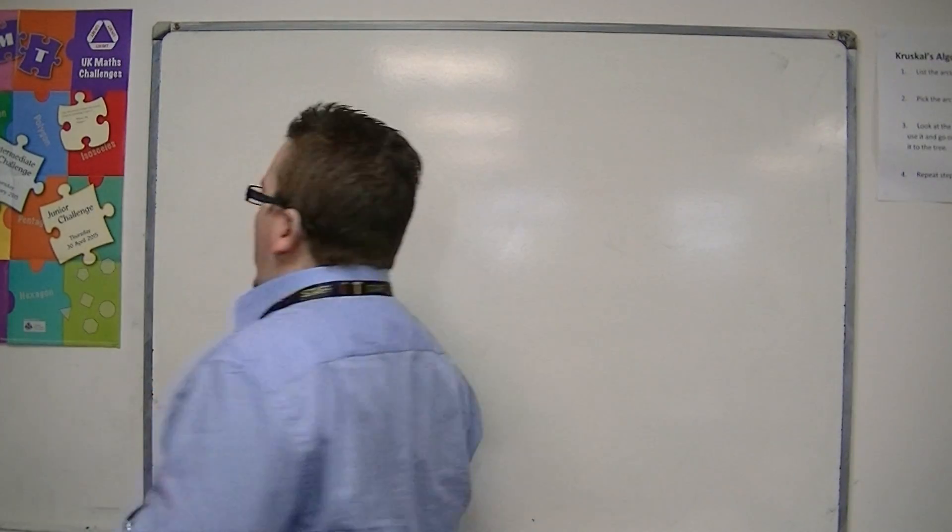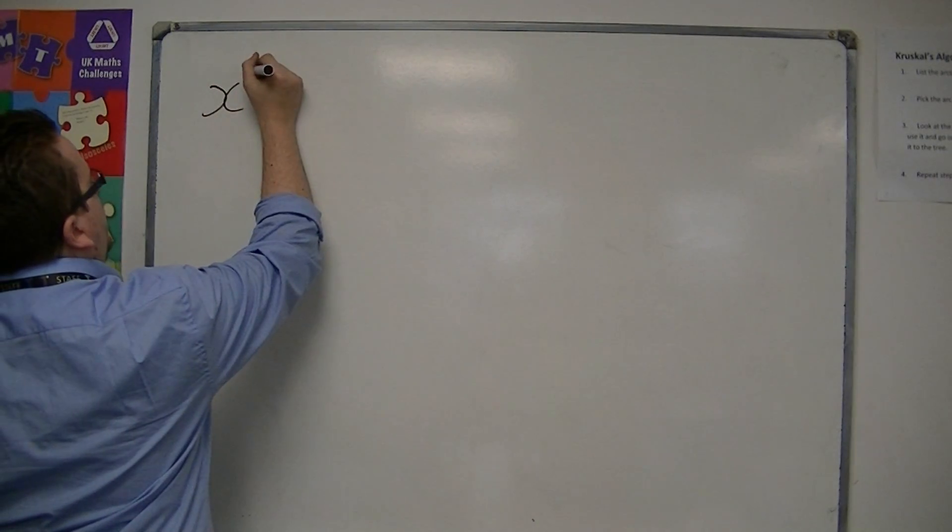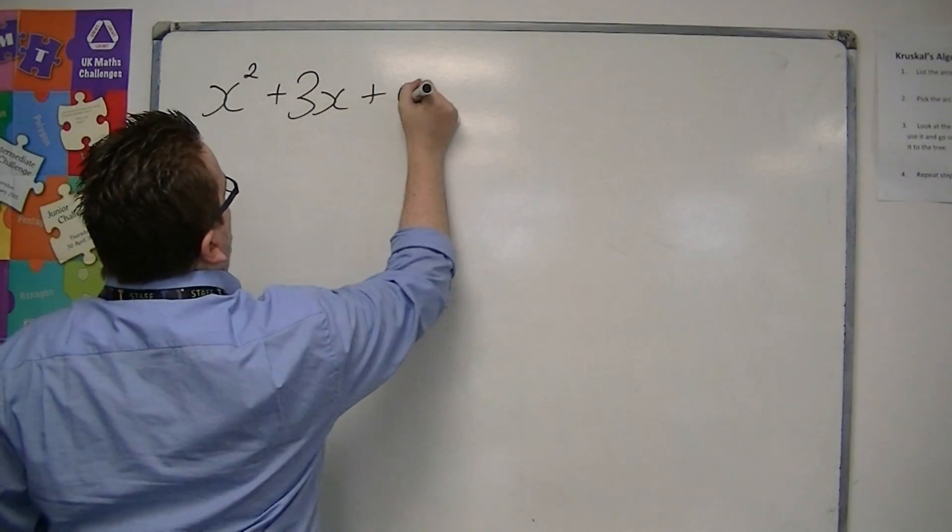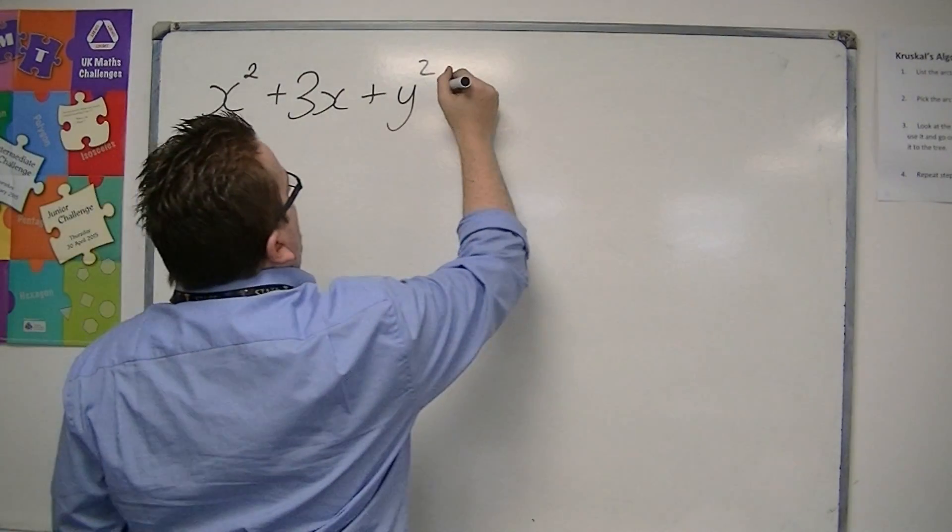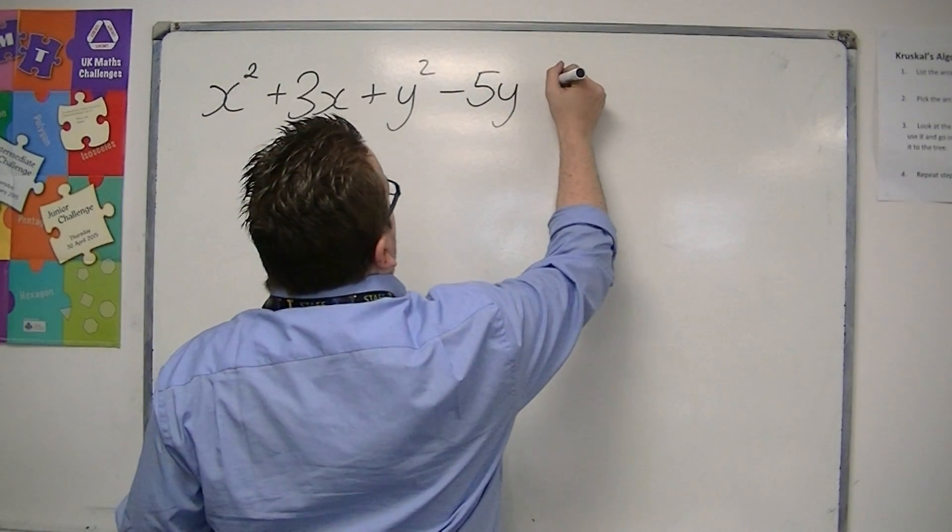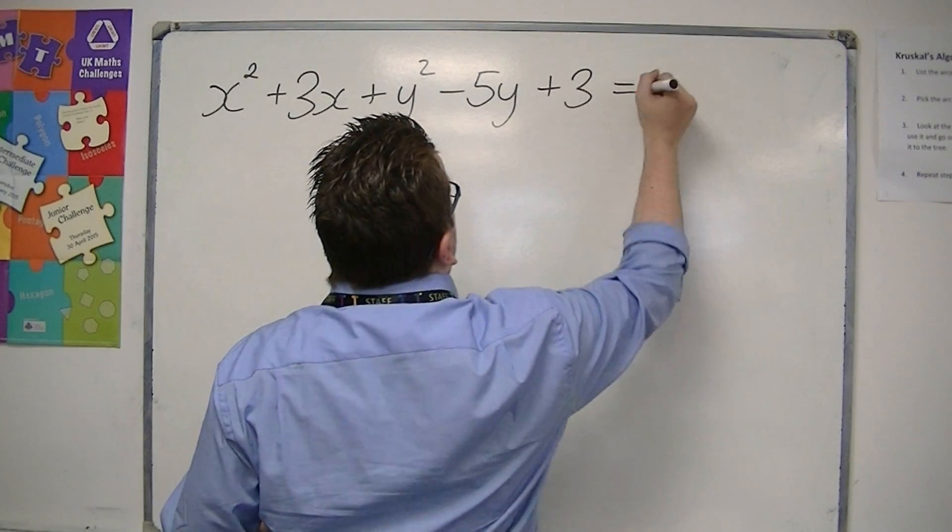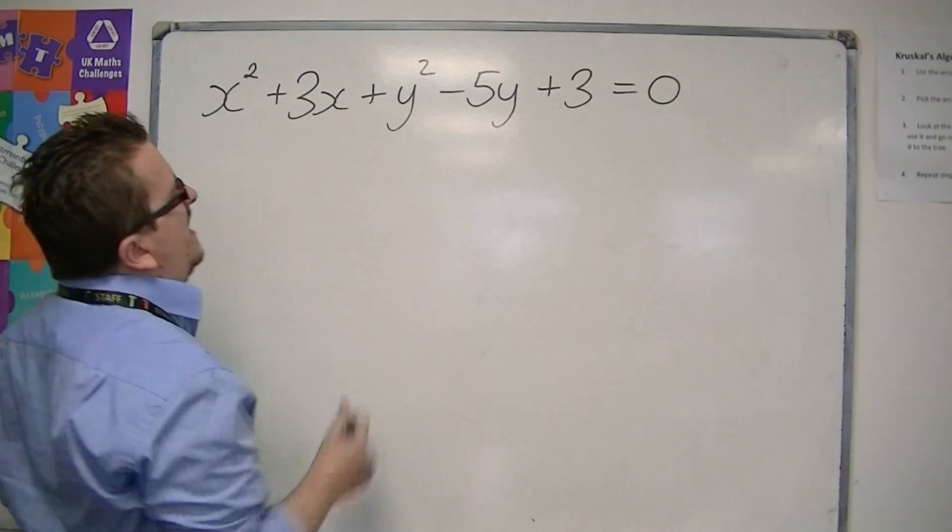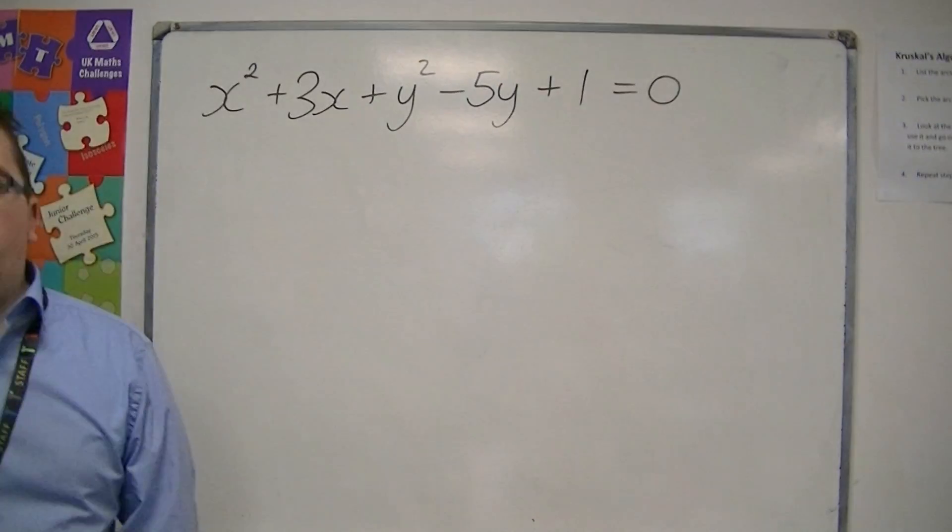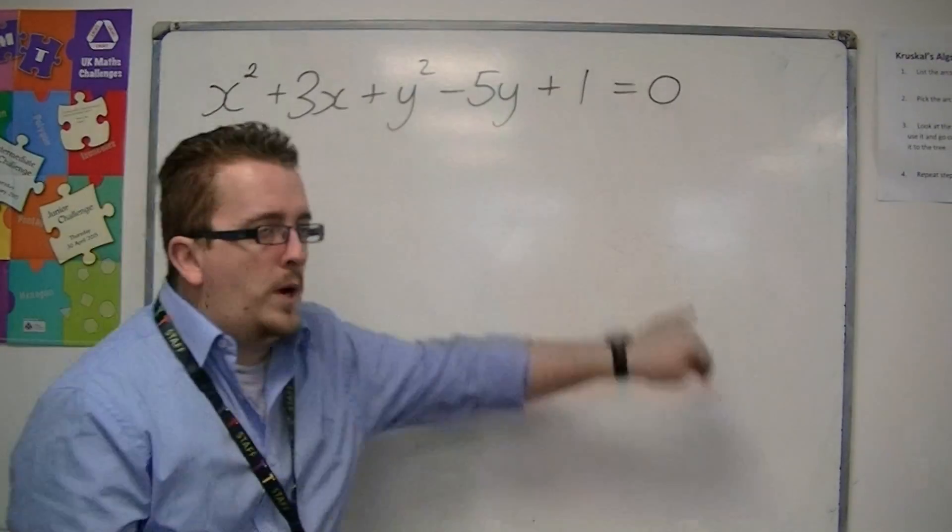Let's say we have a circle equation that's given to us: x squared plus 3x plus y squared minus 5y plus 3 is equal to 0. Actually, let's change this slightly. Let's say that this is plus 1. So I'm going to change the equation right here. So this is the equation of the circle.